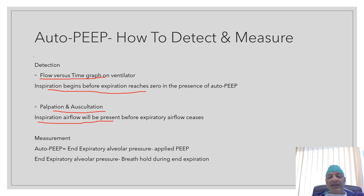If auto PEEP is present, how do we measure it? You can measure it by measuring the end-expiratory alveolar pressure, and this value is measured during breath-holding at end expiration. By then subtracting the applied PEEP from this value, you will get the value of auto PEEP. In most modern ventilators, you will find a button where you can measure the value of end-expiratory alveolar pressure.